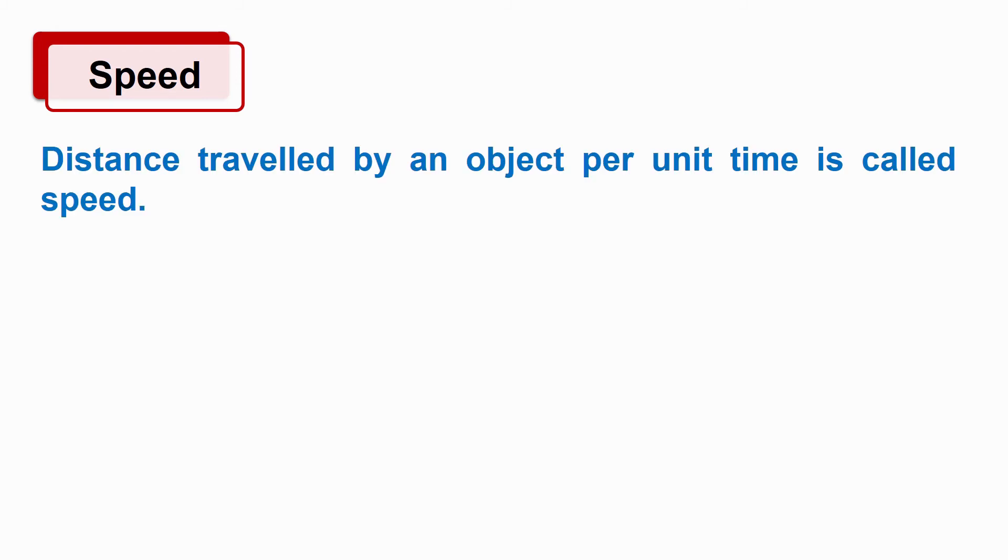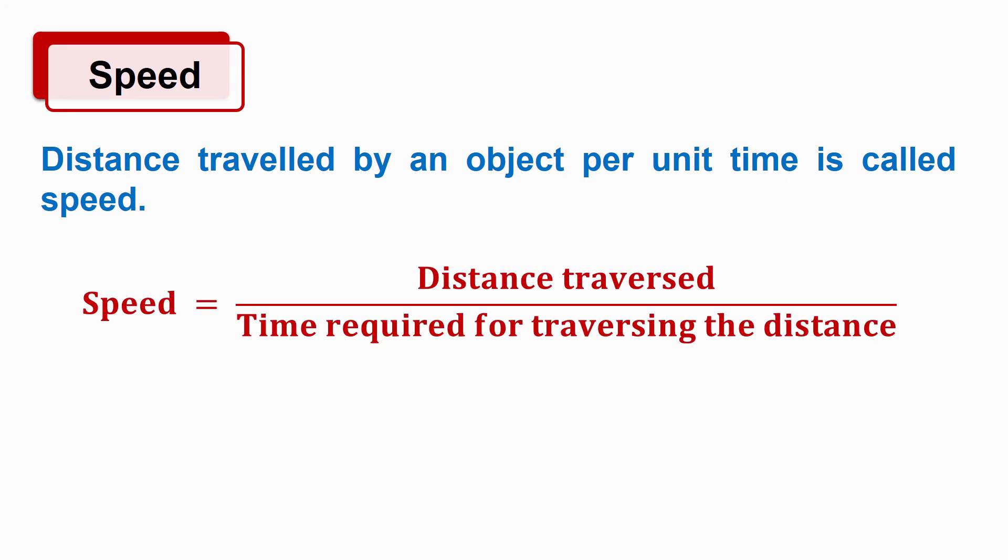From the above discussion let's define speed. Distance travelled by an object per unit time is called speed. From this we can write the formula of speed. Speed is equal to distance traversed divided by time required for traversing the distance. Unit of speed: km per hour, meter per second, etc.